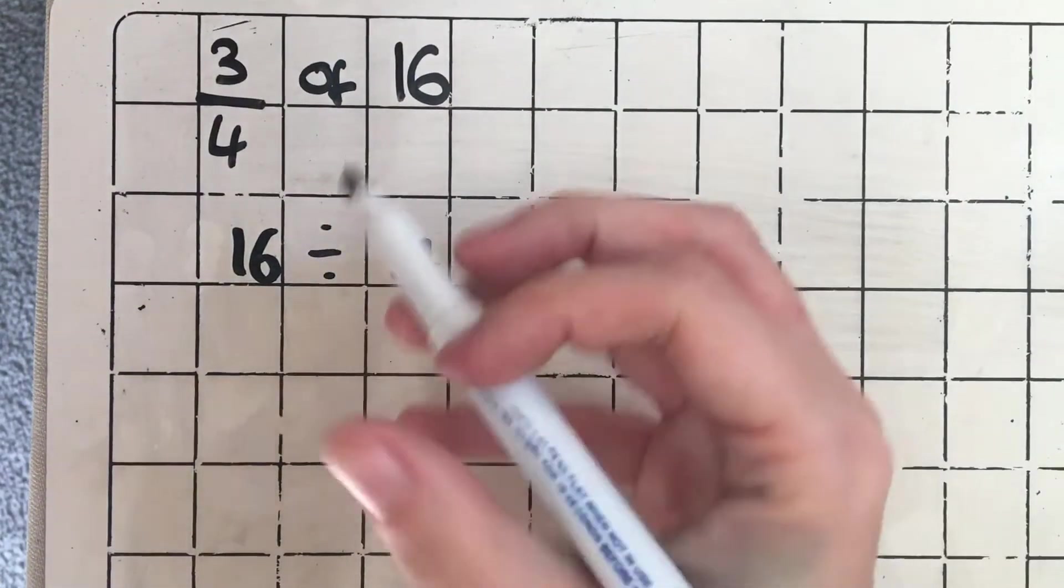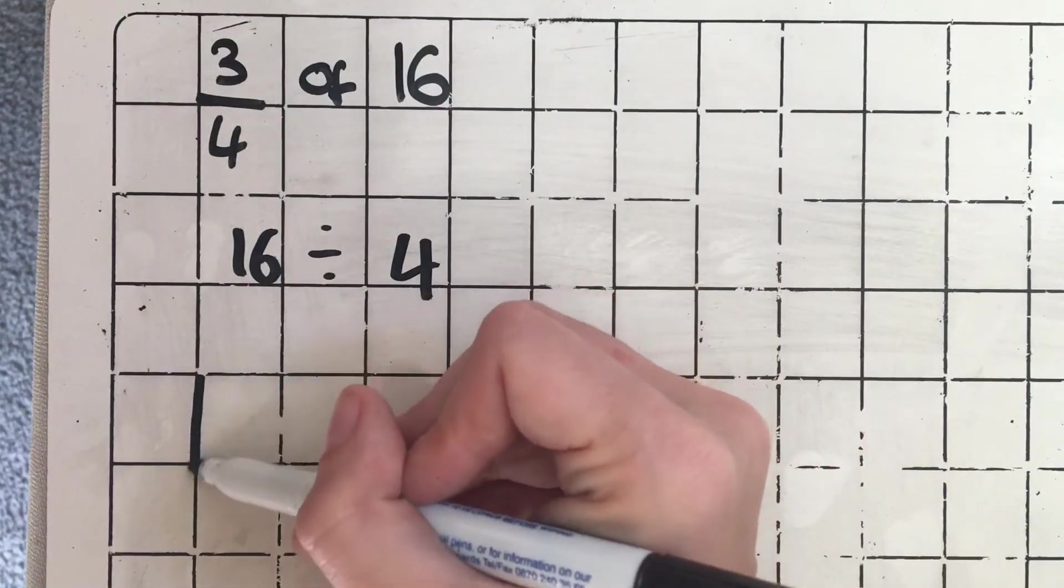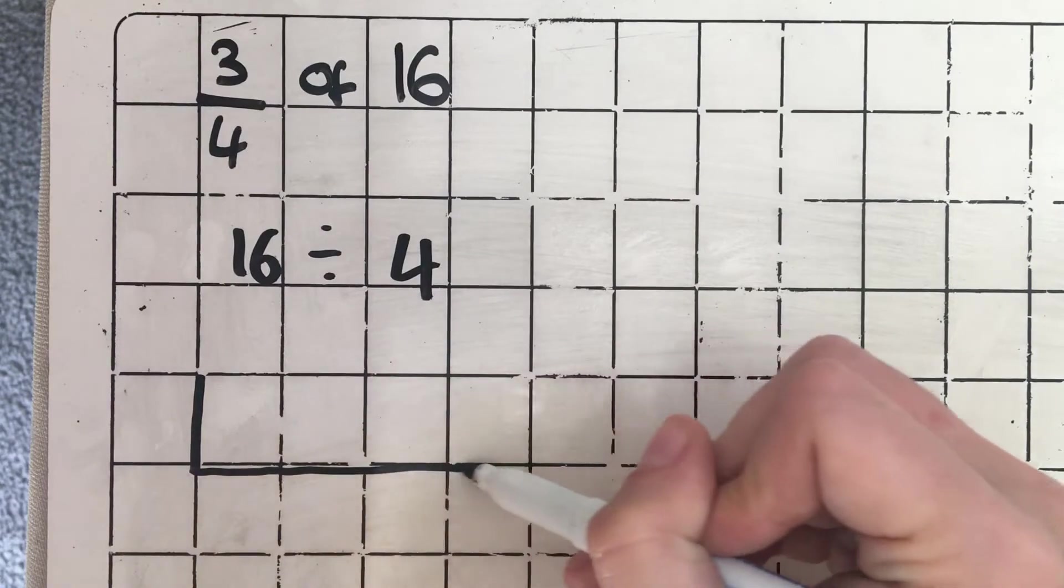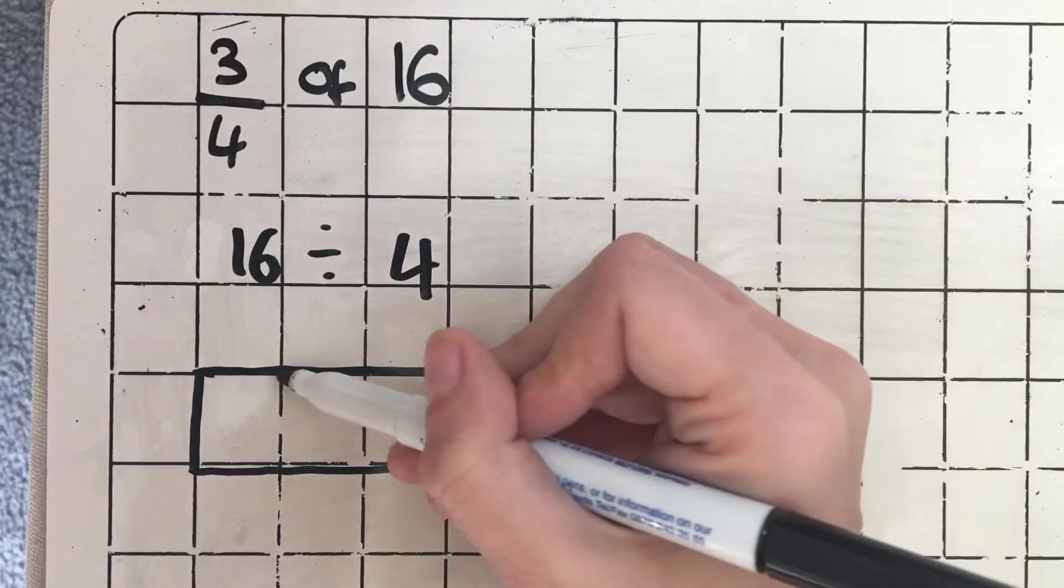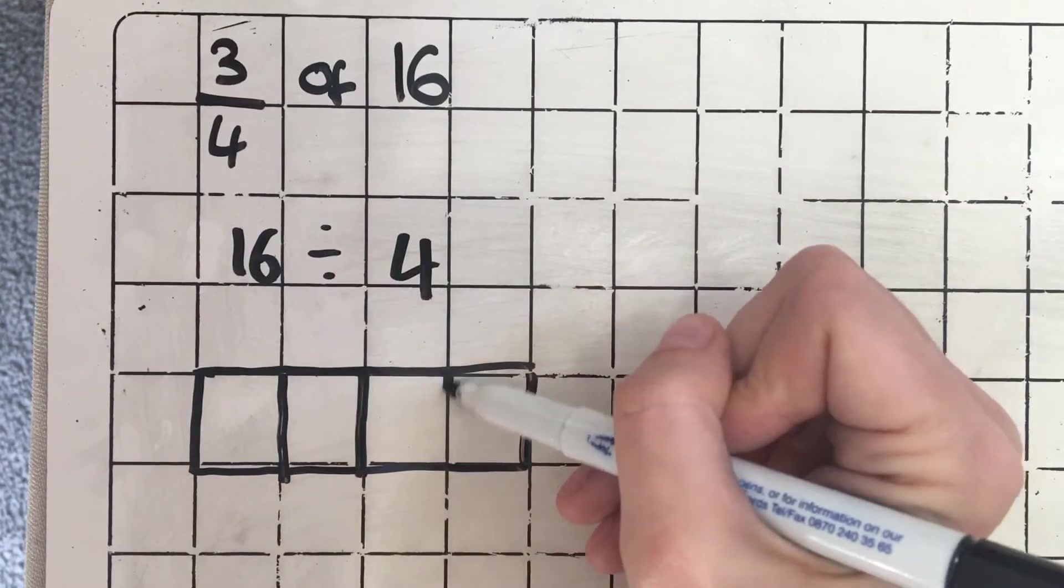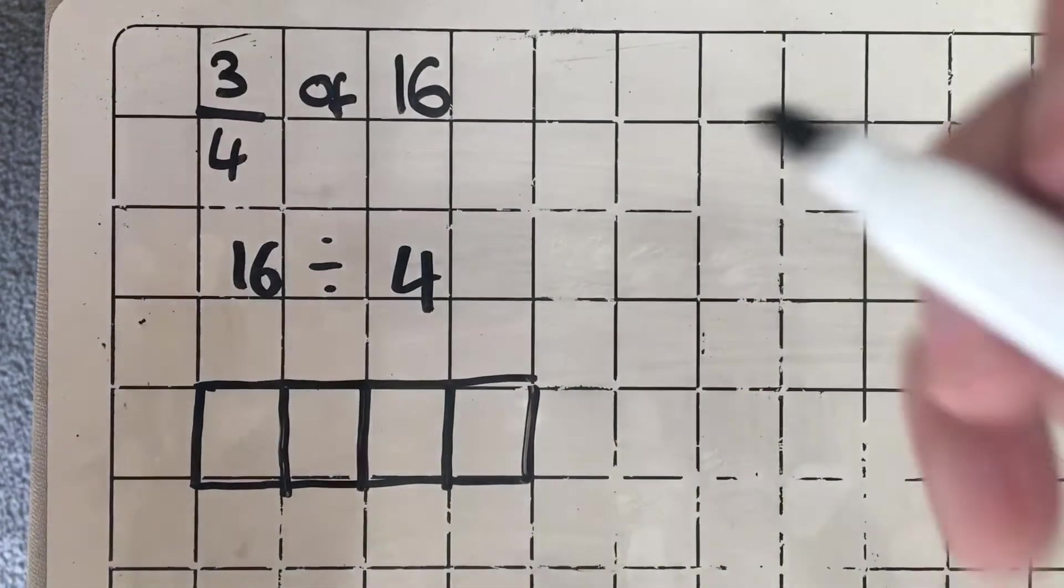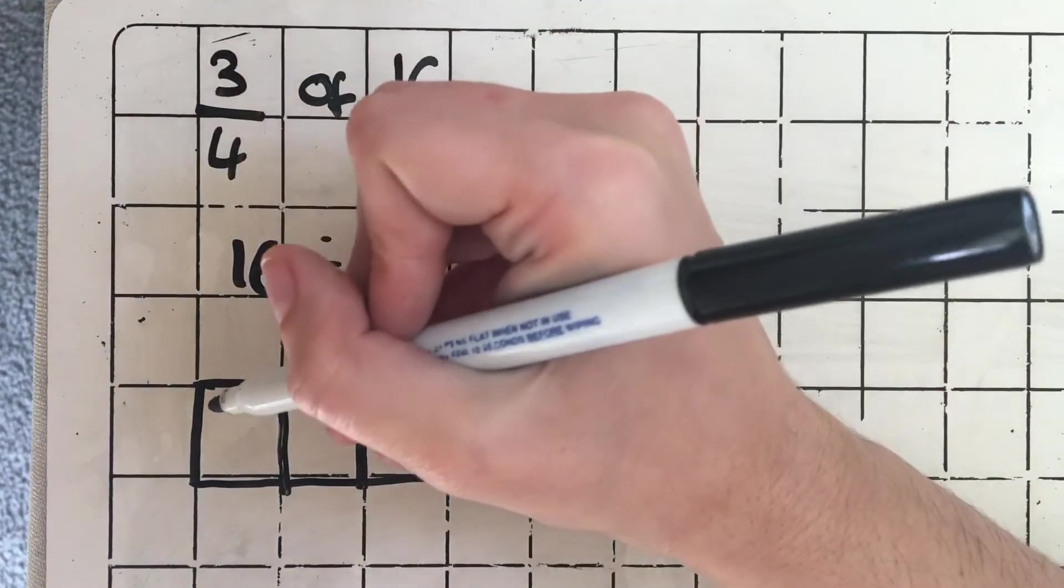So one way we can do that is by using a bar model. So we can draw a whole and split it into 4 equal parts. I'm now going to divide 16 dots equally between my 4 parts.